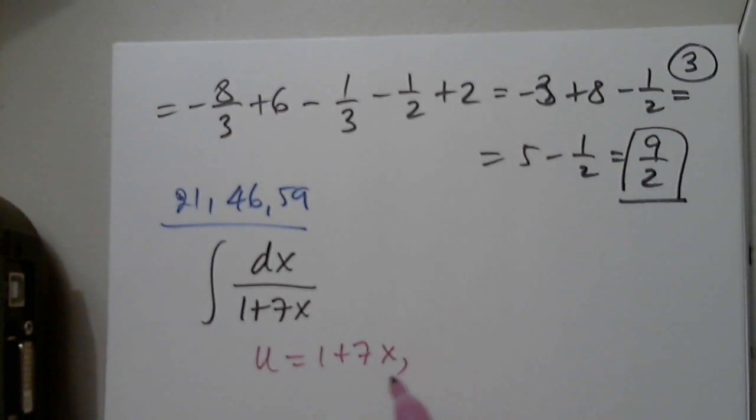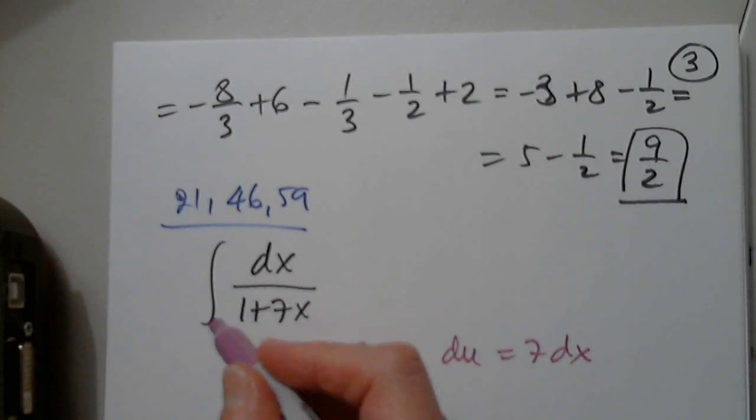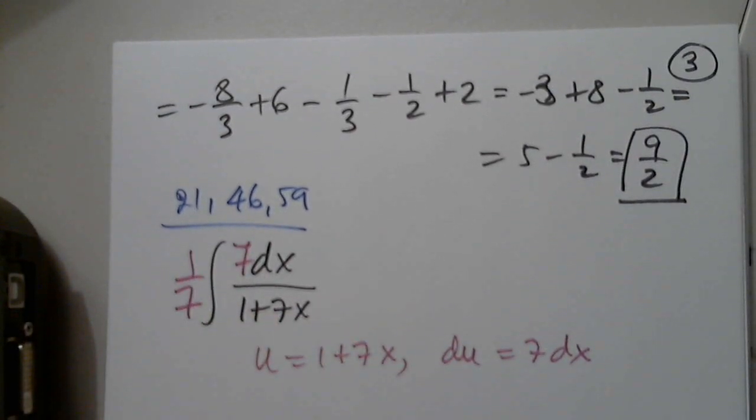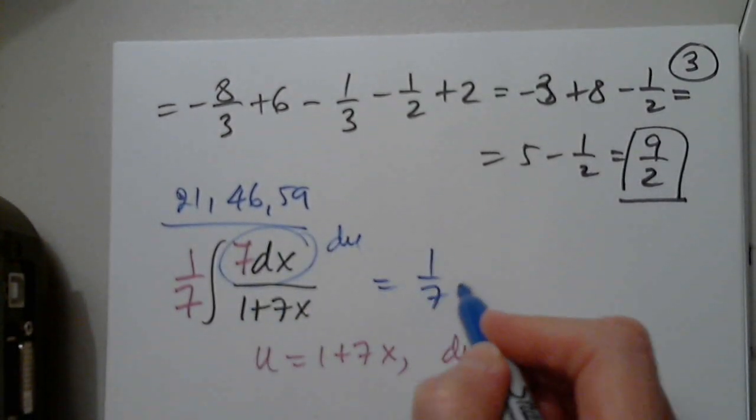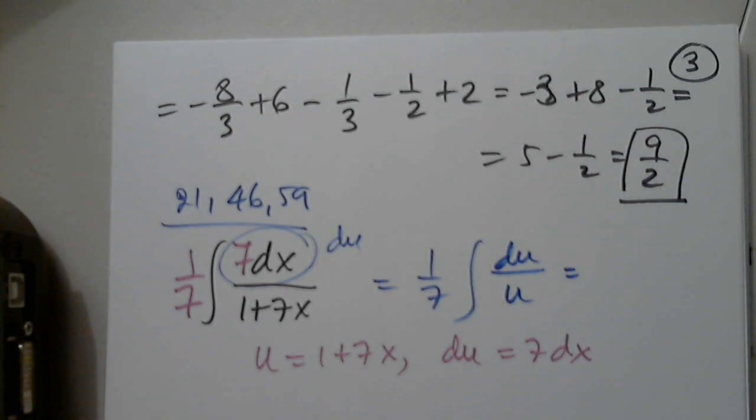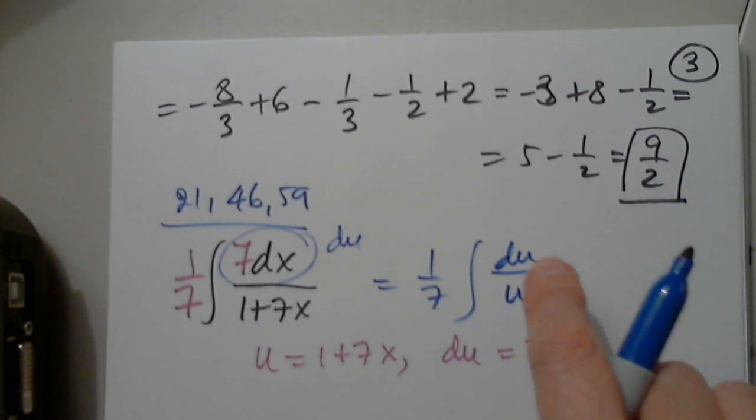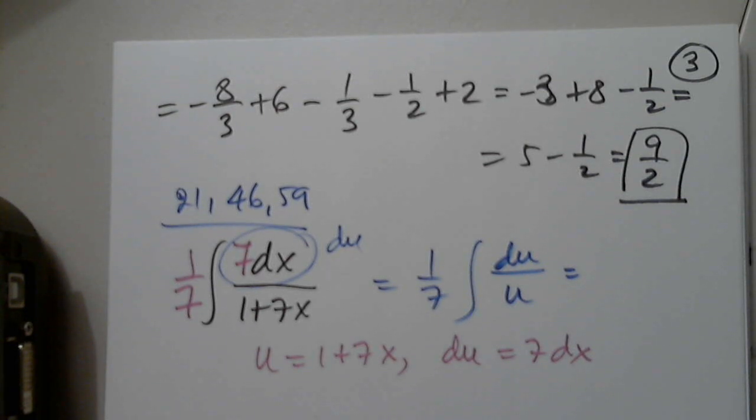So, let u be 1 plus 7x, du equals 7 dx, and we need a 7 and 1/7. Multiplying the numerator by 7 and multiplying the denominator by 7 will not change anything. So, this is the du. So, we have 1 over 7, du over u. Now, we're asking ourselves what function prime is 1 over u. Anyone remembers which function we differentiate to get 1 over u? Natural log. Excellent. So, 1 over 7, natural log of the absolute value of u plus c. So, please never forget the absolute value.